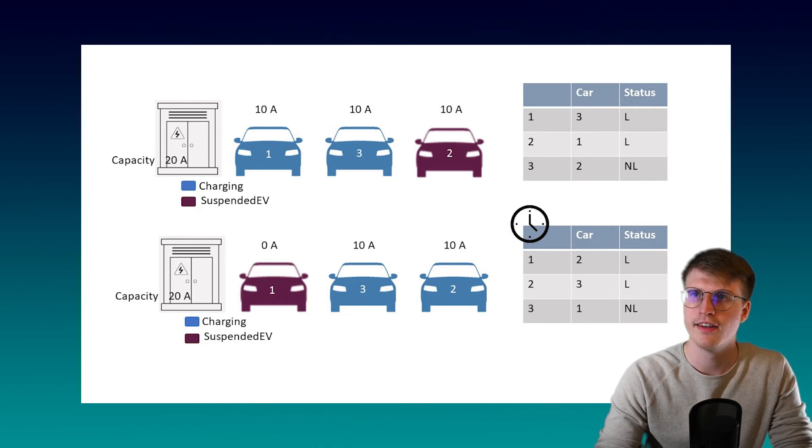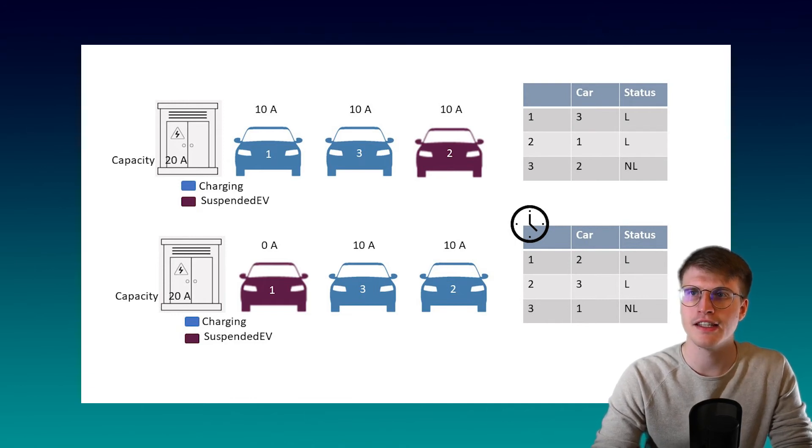In the last scenario for the load management, the station does not have enough current to supply each car with its min current. This means that the previously detected min current of the car still plays a role here. If this is the case, the so-called carousel mechanism kicks in.